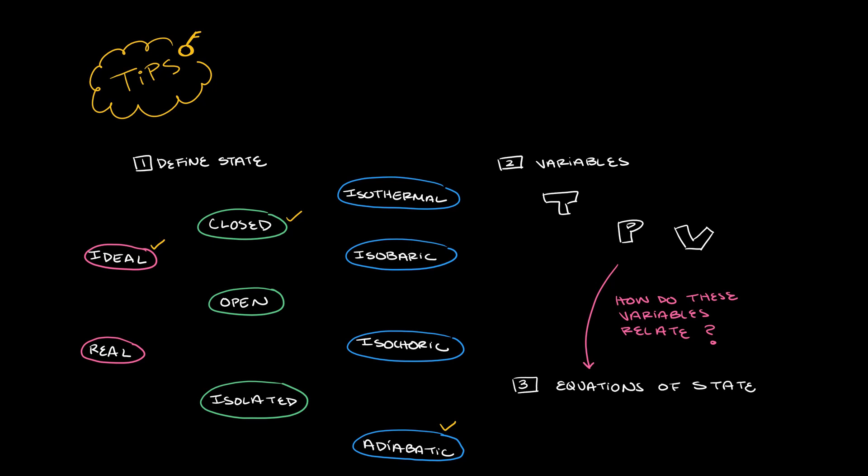What variables describe the system? In this course we will start with describing systems from a macroscopic point of view, so using temperature T, pressure P, and volume V. What is the relationship between these state variables? These are where the equations of state come into play.